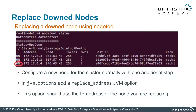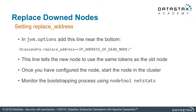You can see here this is a nodetool status output, and what we're seeing is a node that we want to replace. So we want to configure a new node for the cluster normally with one step — we want to replace address. This should be the IP address of the node you want to replace. You can see here we have 172.17.0.4 — let's replace that one. Whenever you start that node, in the JVM options file you'll put the IP address of the dead node inside there, just to give it an indication: that IP address, I want to replace that one. This is a shortcut operation — it says I just want to replace whatever that was, give me all the data and let's keep it at that.